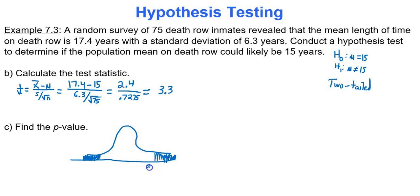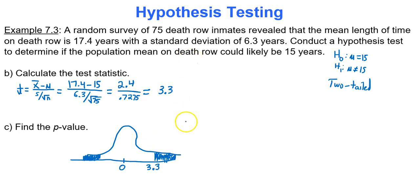The test statistic is 3.3, which is positive, and it separates the right region from the rest of the bell curve. We assume the mean is 0 because of how we standardize our test statistics. For Google Sheets, we'll go to the compute tab and use the normal region. For simplicity, we'll use the normal region on the compute tab.